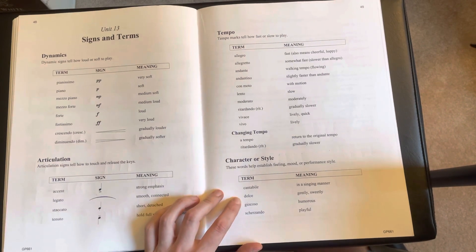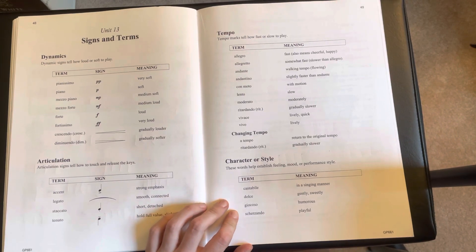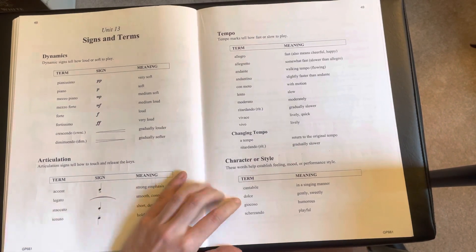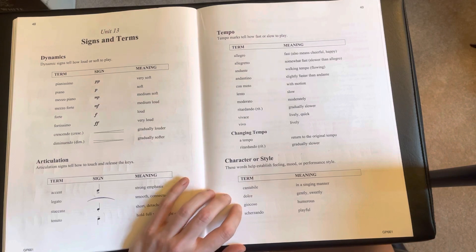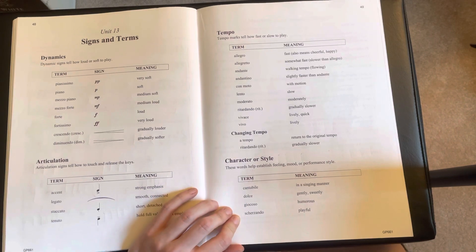And here are some character and style terms as well. We have cantabile, dolce, giocoso, and scherzando.